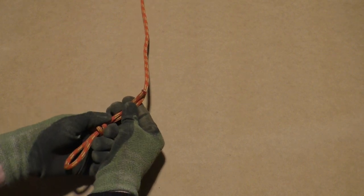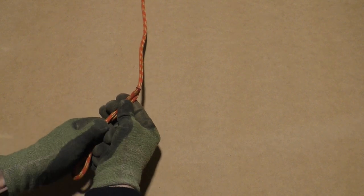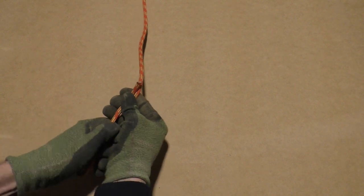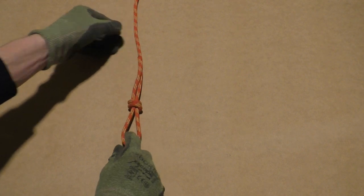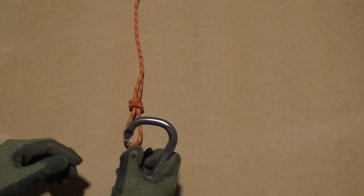Remember to leave at least 3 inches of tail sticking out for safety reasons. Now you can attach the carabiner and pull the knot tight. And there you have your double fisherman's loop.